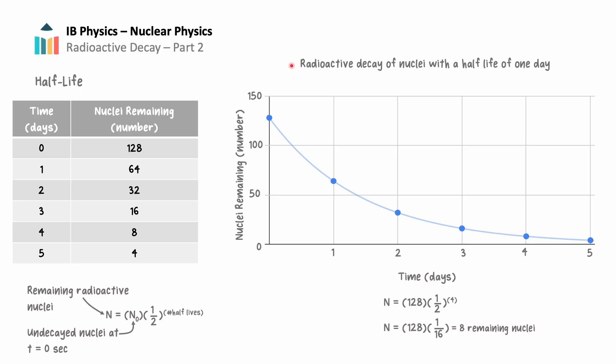Therefore, after one half-life, a sample of 128 radioactive nuclei will have half, or 64, radionuclides. After two half-lives, the sample will have 32 radionuclides remaining, and so on.